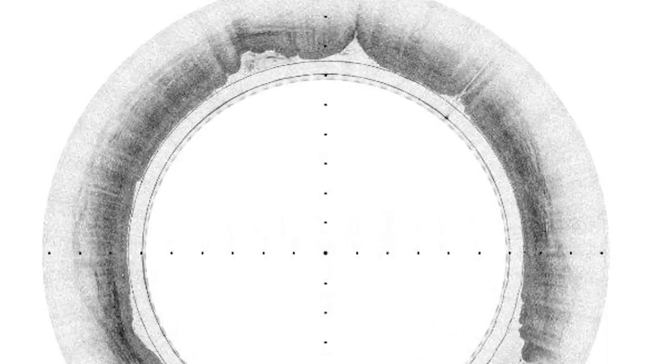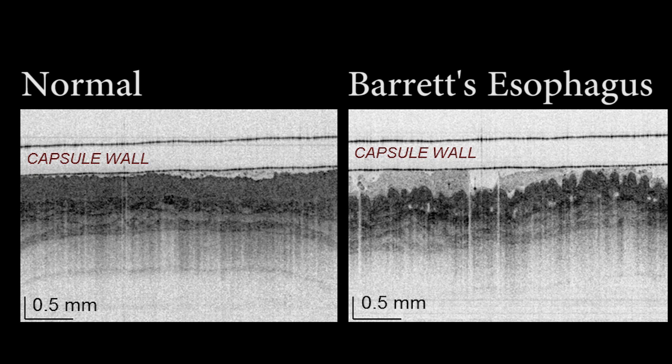With the device, doctors can look for abnormalities like Barrett's esophagus, a disorder which places patients at risk for esophageal cancer, and they can do so without having to use invasive surgical procedures.